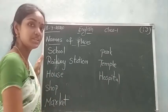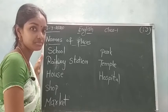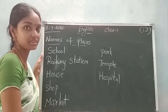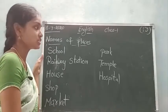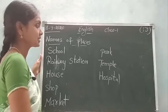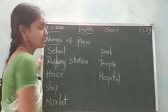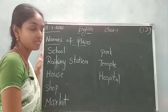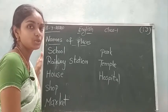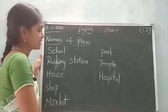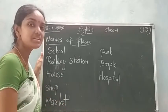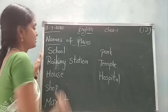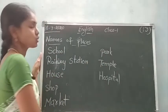Next: park — did you go to the park? Do you like the park? You enjoyed a lot in your park. Next: temple — did you go to the temple? Why do we go to temple? To pray to God. Next: hospital — whenever you are sick, you go to the hospital. These are the names of some places.